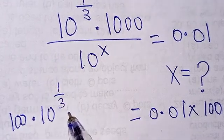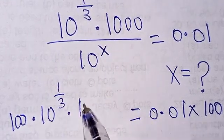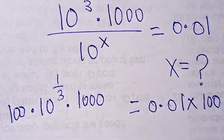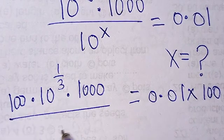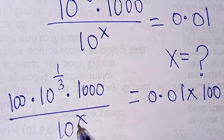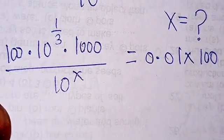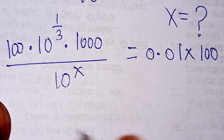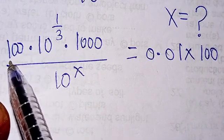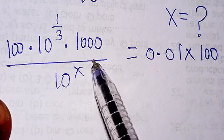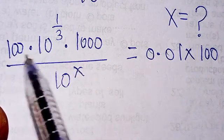So now from there we move further. If I should multiply this 1000, because I want to bring them together, if I should multiply this 1000...